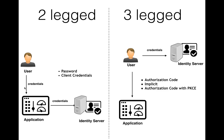There are two ways of authentication: a two-legged approach and a three-legged approach. In the two-legged approach, the user only speaks to the application and never speaks to the identity store directly. In the three-legged approach, the user speaks to the identity server directly, gets authenticated, and then the access token is passed to the application. The first two grant types — client credentials and password — are more of a two-legged approach, whereas authorization code is a three-legged approach.